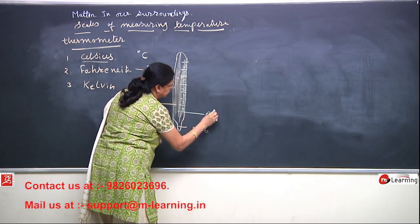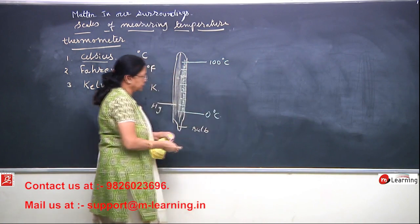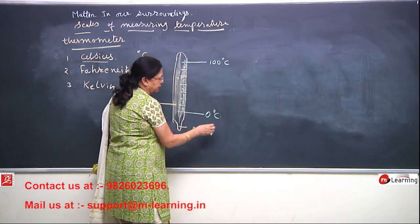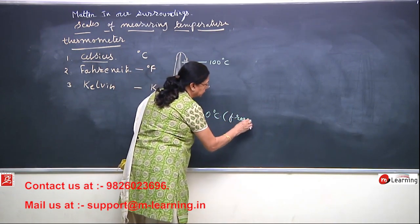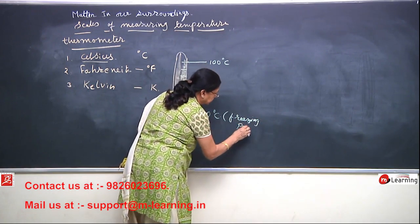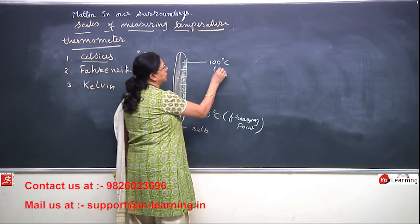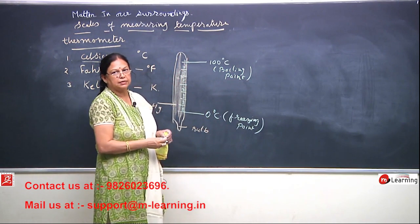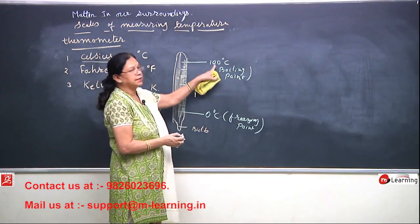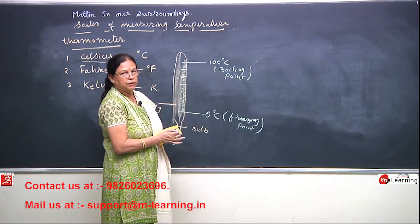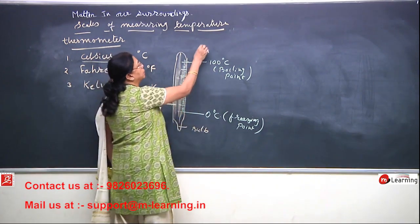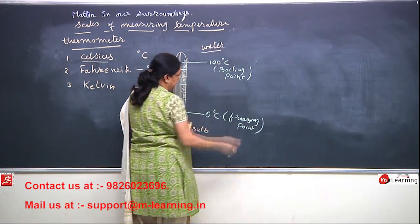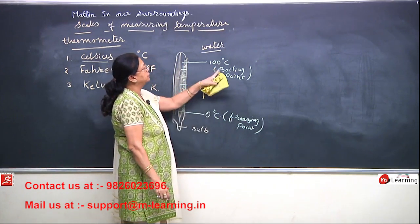Here you see 0 degree Celsius and here you find 100 degree Celsius. 0 degree Celsius is the freezing point — freezing point means water starts freezing at this temperature. And 100 degree Celsius is the boiling point — the temperature at which water starts boiling. So the freezing point of water is 0 degree centigrade and the boiling point is 100 degree centigrade.